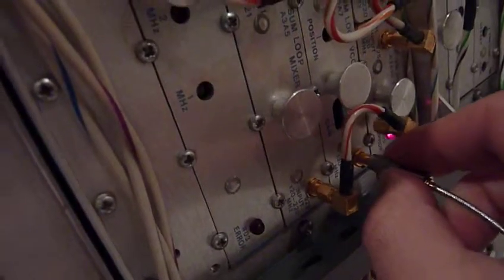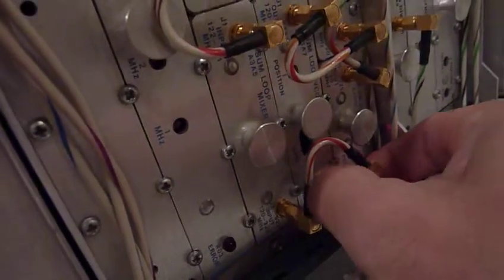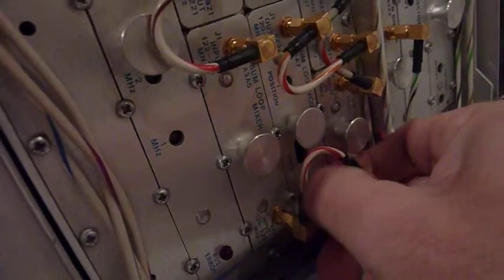And I made a little cable here so I could look at the output of the VCO, which is now free running, because I have just broken the loop. It says output 120 to 220 MHz. Everything is written on this machine, this is just great.